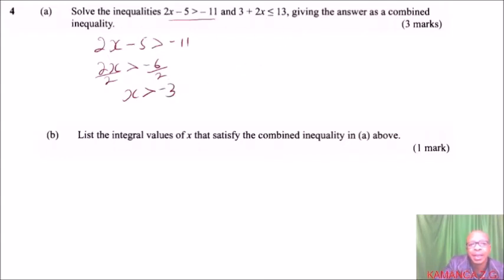Then, we can take the other one. We say this is 3 plus 2x less than or equals 13. We take 3 to the other side. So, we have 2x less than or equals to 13 minus 3. That will give us 10. And, we divide both sides by 2. So, it means x is less than or equals to 5.